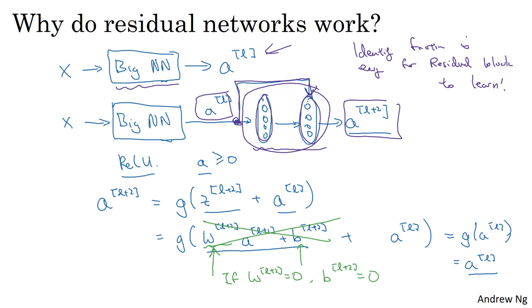And I think the main reason the residual network works is that it's so easy for these extra layers to learn the identity function, that you're kind of guaranteed that it doesn't hurt performance. And then a lot of the time you maybe get lucky and it even helps performance. Or at least it's easier to go from a decent baseline of not hurting performance and then gradient descent can only improve the solution from there.